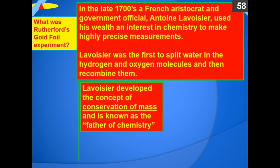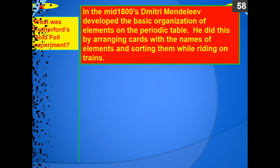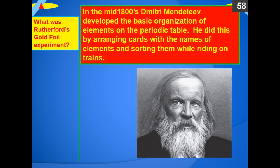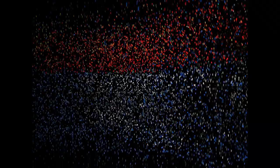In the late 1700s, French aristocrat and government official Antoine Lavoisier used his wealth and interest in chemistry to make highly precise measurements. Lavoisier was the first to split water into hydrogen and oxygen molecules and then recombine them back into water. He developed the concept of conservation of mass and is known as the father of chemistry. In the mid-1800s, Dmitry Mendeleev developed the basic organization of elements on the periodic table, arranging element cards while riding trains. Linus Pauling is the most famous chemist of the 20th century, making many advances in quantum theory, molecular orbital theory, and biochemistry.